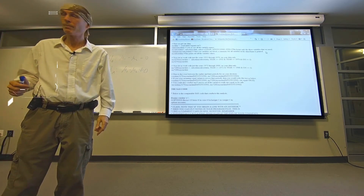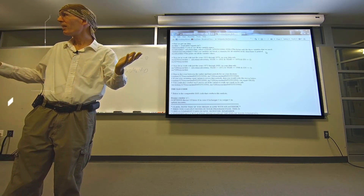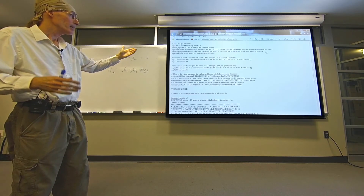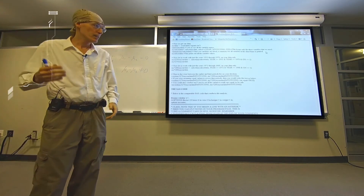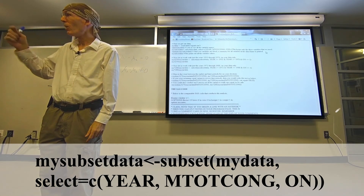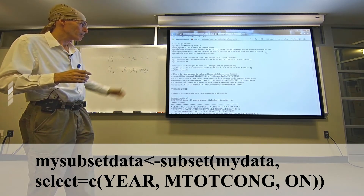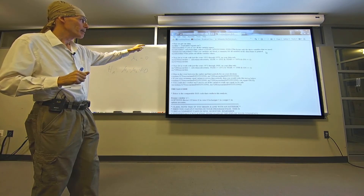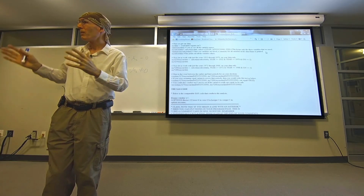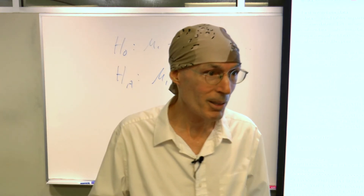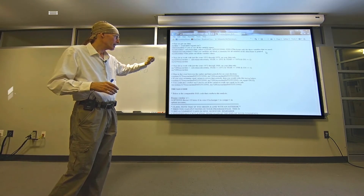Now let's actually look at the data and the R code. The beginning of the R code should make sense to you — it looks like the same thing we had before. We have: read the data set, get the names of the variables, the summary giving median, mean, and interquartile range, and then subset the data. The only difference now is that in addition to selecting year and mtotcong, we're also selecting out the variable 'on.' So we'll have three variables in our subset data instead of two.